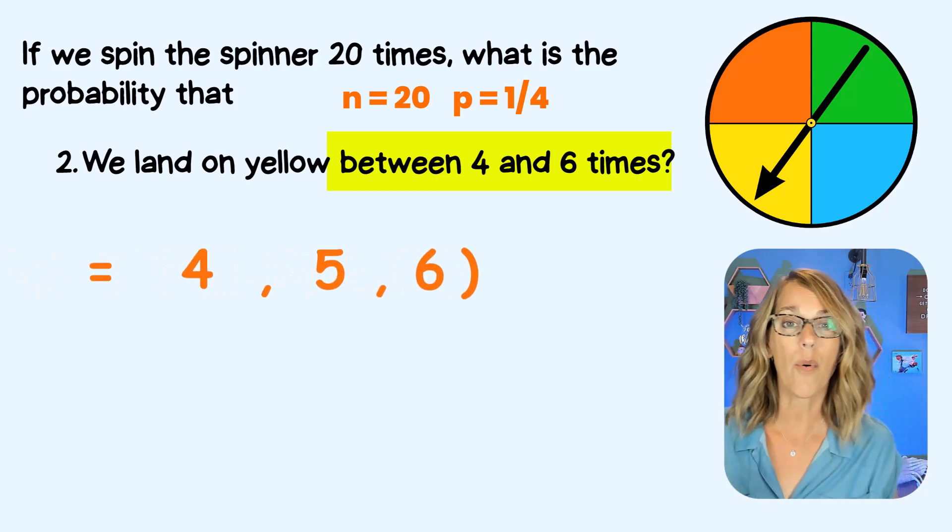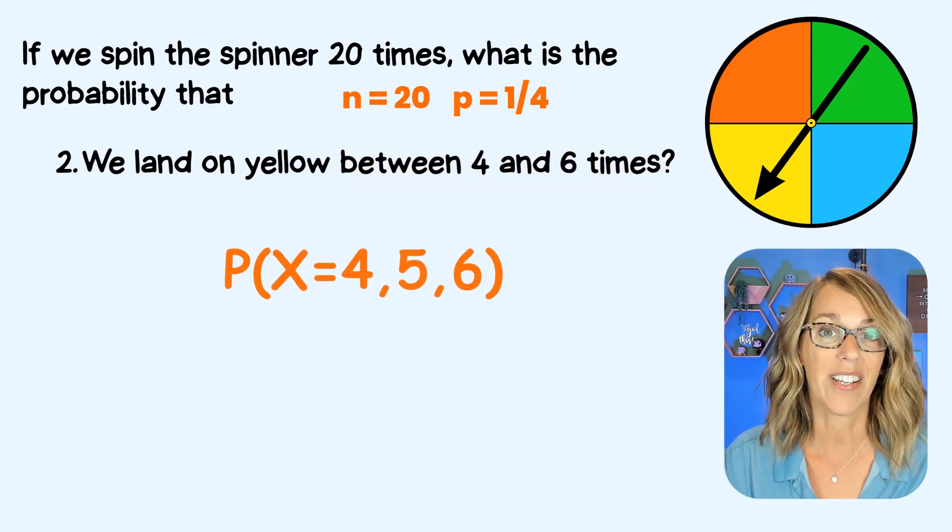That would be the probability of getting a four, a five, or a six. Let's go back to that calculator.